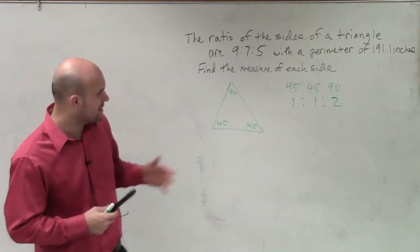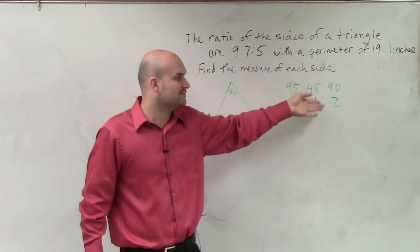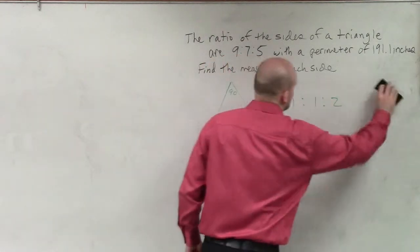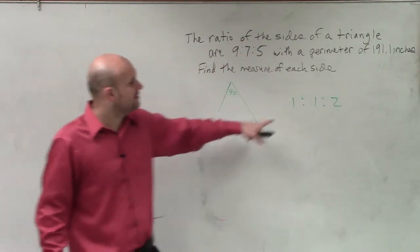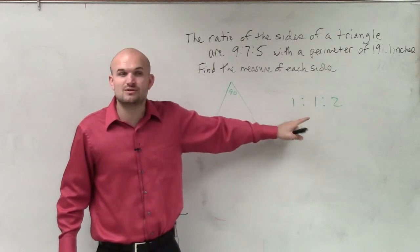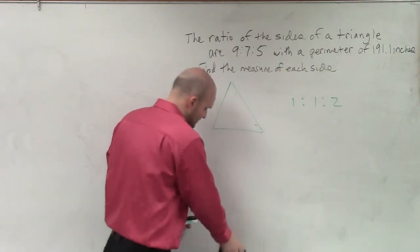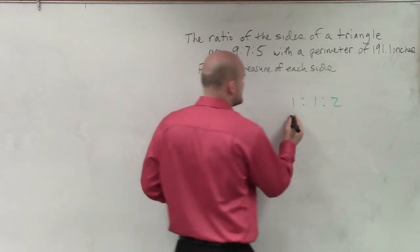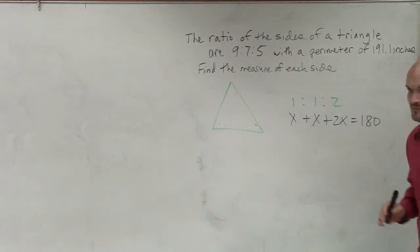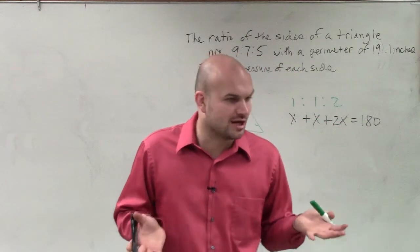What we want to do is determine: how do I get from 45, 45, 90 to 1, 1, 2? I divide by 45. But let's say you didn't know the actual angles. Here's the ratio of the angles — what are the real angles of the triangle? What we would do is write an equation: x plus x plus 2x equals 180, where x is the factor we multiplied or divided to get our angles.